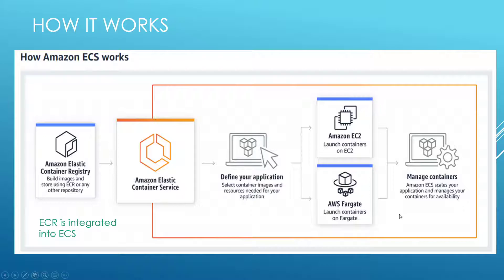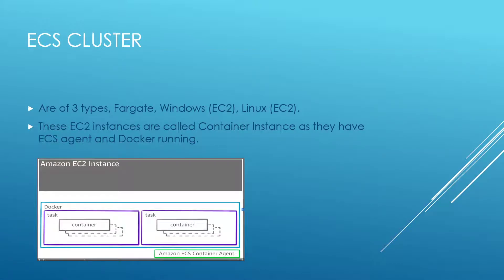Based on the task definition, containers are run in your cluster or Fargate. If Fargate runs it, you don't have to worry about anything else. Now let's go through the building blocks one by one. The first is the ECS cluster. There are three types of clusters — Fargate, Windows, and Linux. Container instances in ECS clusters are a little different from regular EC2 instances because they have an ECS agent and Docker running in each instance, so the ECS agent can communicate with the ECS service on your behalf.